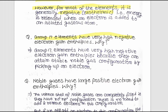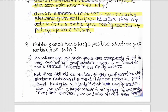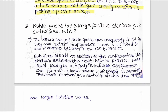Now the next question: why do Group 17 elements have very high negative electron gain enthalpy? The answer is that Group 17 elements have very high negative electron gain enthalpy because they can attain stable noble gas configuration by picking up an electron.